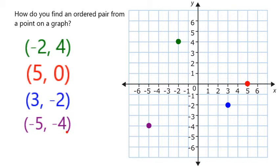And like this, we can translate between ordered pairs written out with the horizontal position or x value first and the vertical position or y value second and the corresponding point on the coordinate plane.